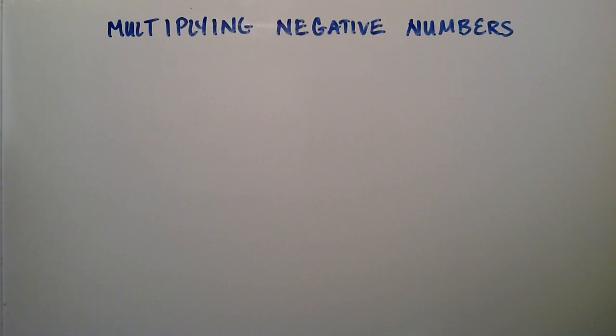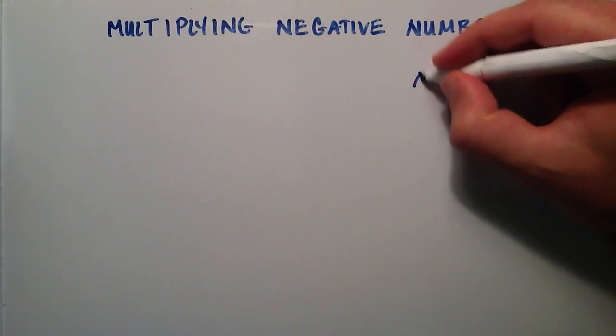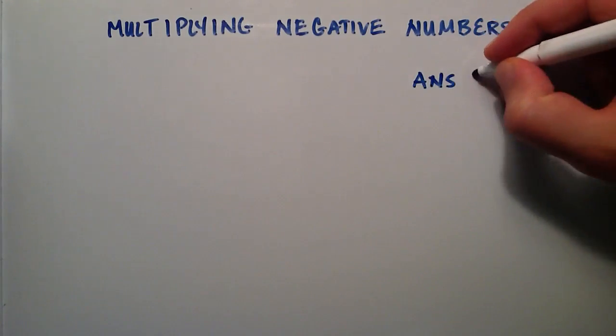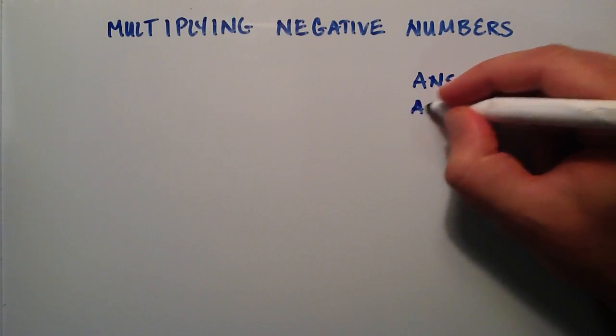In this lesson, I'm going to explain how to multiply negative numbers. When you multiply negative numbers, you do the same thing as if you were multiplying positive numbers, except sometimes your answer will be negative and sometimes your answer will be positive.